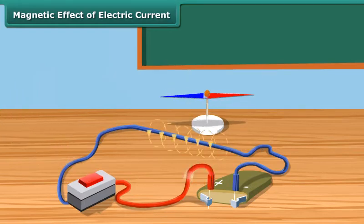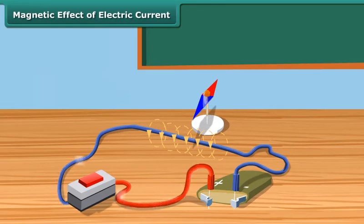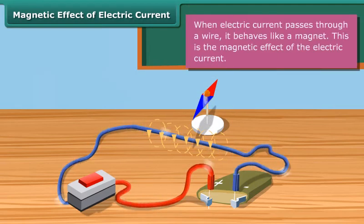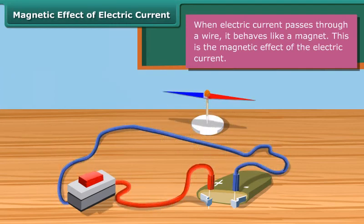The needle gets deflected from its north-south position when current is passed through the wire. When electric current is switched off, the needle returns to its original position. This shows that an electric current produces a magnetic field around it.